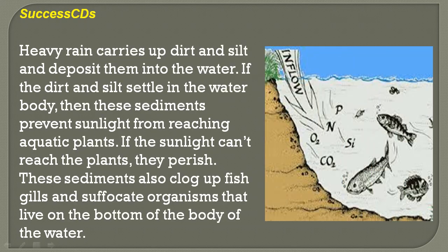Heavy rain carries up dirt and silt and deposits them into the water. If the dirt and silt settle in the water body, these sediments prevent sunlight from reaching aquatic plants, causing them to perish. These sediments also clog up fish gills and suffocate organisms that live on the bottom of the water body.